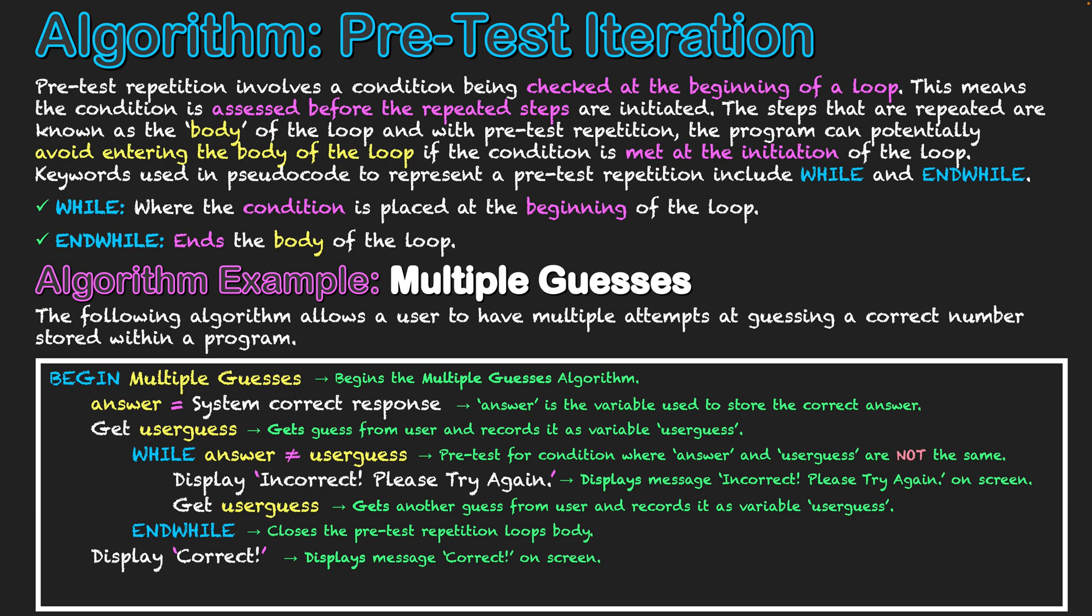We only enter the loop if we need to satisfy something that is not being met yet in the program. But if we meet it straight away, we can bypass that section of the program and then move on down into the lower steps of our algorithm. Once they're correct, this algorithm is now complete — Multiple Guesses.